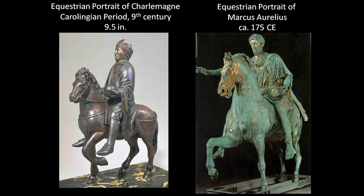If you think about it, it fits perfectly with Charlemagne's agenda, because what he's trying to do is emulate early Christian Rome — so it would make sense to have his image similar to Constantine's. I want to take a moment to talk about the superstars of the Middle Ages. The two superstars are Constantine and Charlemagne. We will see these figures as a presence in medieval art throughout the entire Middle Ages, because they're seen as really using their political power to further the power and influence of the Christian church.